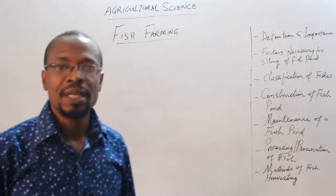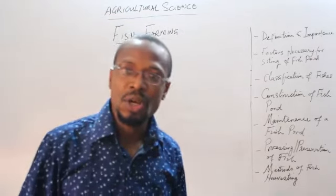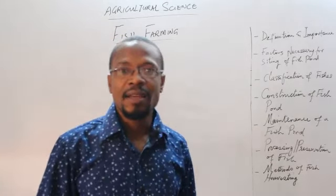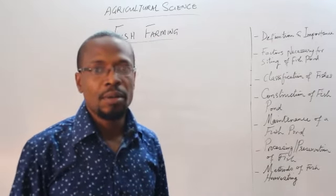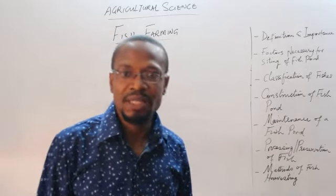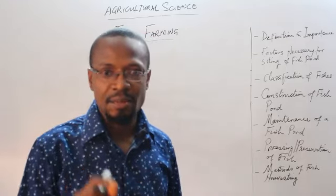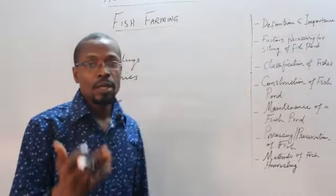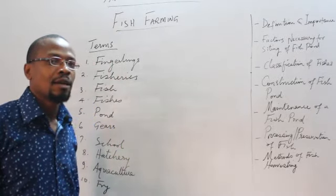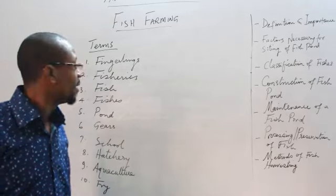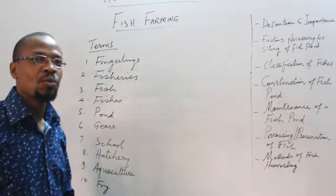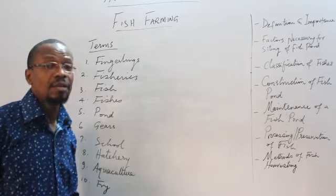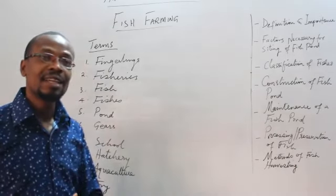When we talk about fish farming, a number of terms come to mind — terms like fingerlings, fish pond, and fishing implements. Let's look briefly at the terms that should be considered when we are talking about fish farming. The first is fingerlings. What do we mean by fingerlings? Fingerlings are just like seedlings in terms of crops — you have fingerlings in terms of fishes.